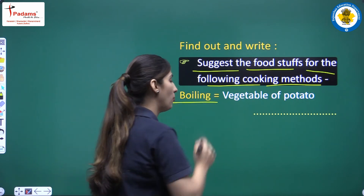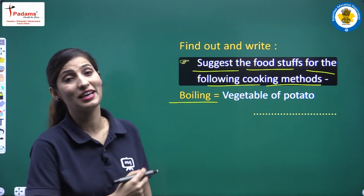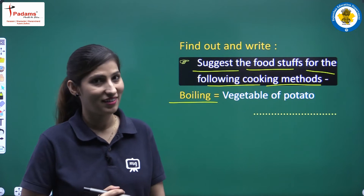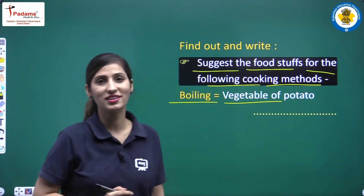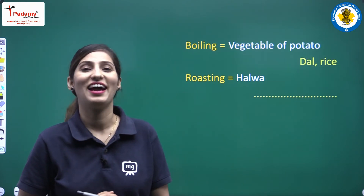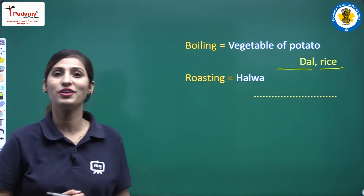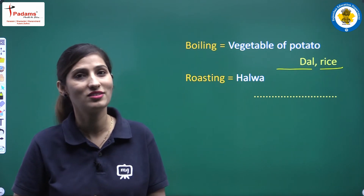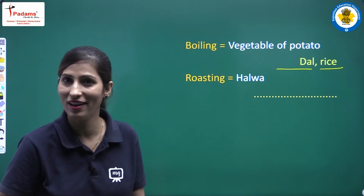First one is boiling. We have given you one example and we will write more. What do we make by boiling? Potato vegetable. And what else can we make using the boiling method? The answers are dal and rice — when we make dal, we first boil it. Rice too is cooked using the boiling method — ubalna.